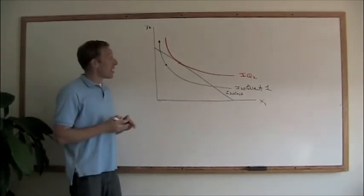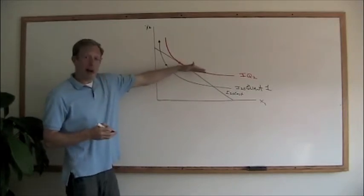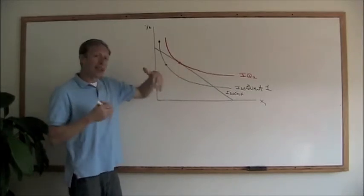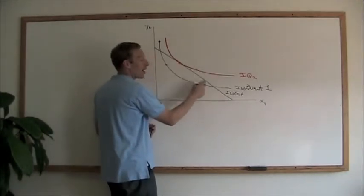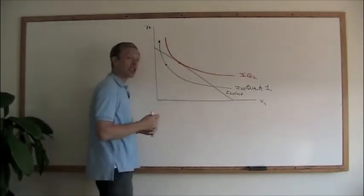what that's showing us is that we can produce this amount of output and the least costly way of producing that amount of output is to be on an isocost line that's tangent to it.